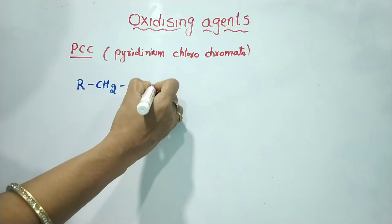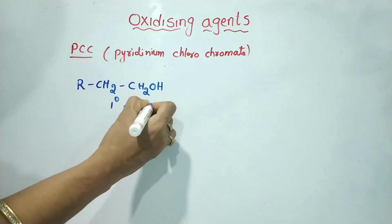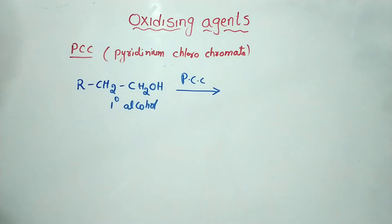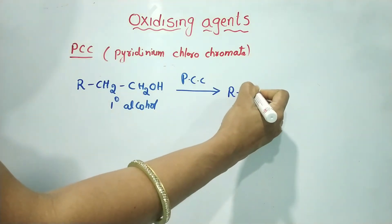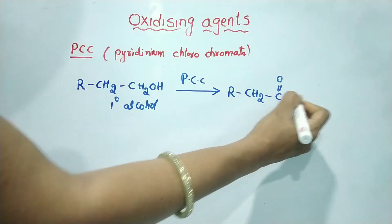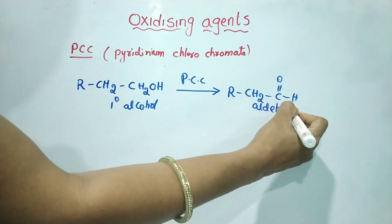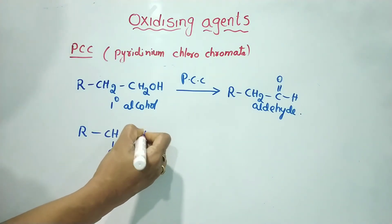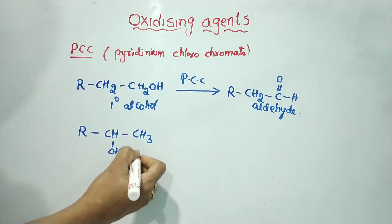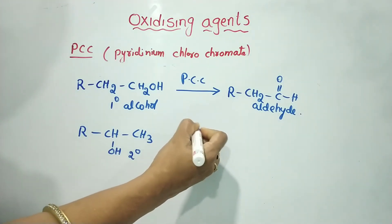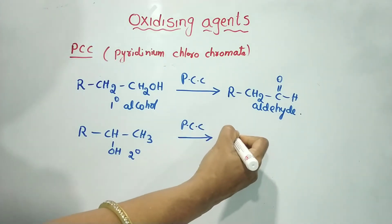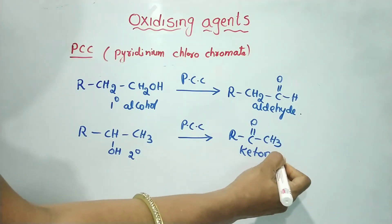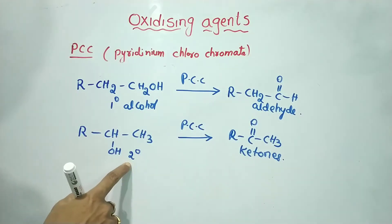In the presence of PCC, primary alcohols (RCH2OH) are converted to aldehydes (RCHO). Secondary alcohols (RCHOHR') are converted to ketones. So: primary alcohols give aldehydes, secondary alcohols give ketones.